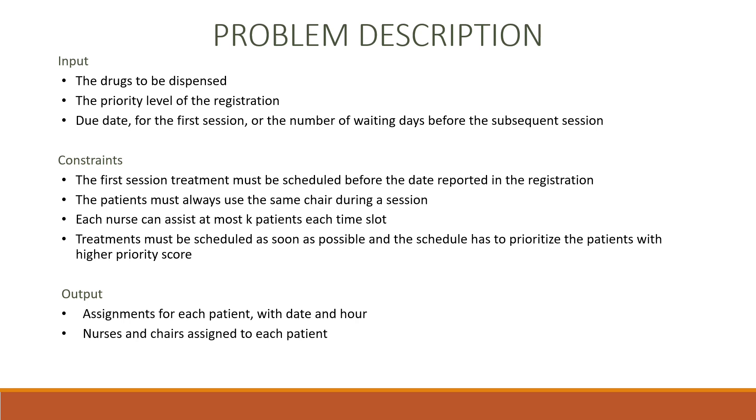The CTS problem consists of computing a schedule for patients requiring chemotherapy treatments. This is a complex problem for oncology clinics since it involves multiple resources and aspects, including the availability of nurses, chairs, and drugs. Chemotherapy treatment has a cyclic nature where the number and the duration of each cycle depend on the different types of cancer and the stage of the disease. For our solution, the input consists of a list of registrations, having some information as the drug that the patient needs, and we consider at most three drugs for treatment, the priority score of that patient, and the due date, if the registration is for his first treatment, or the days he has to wait before the next treatment.